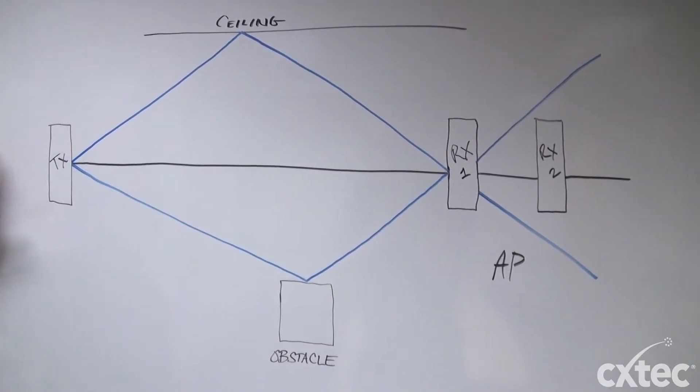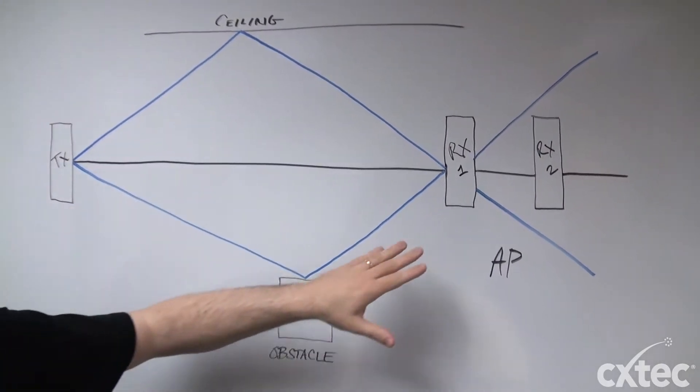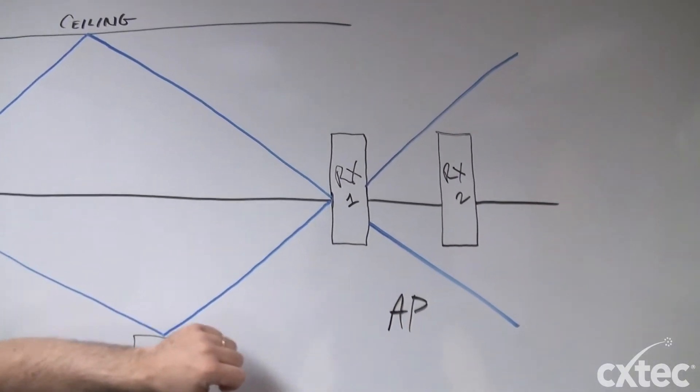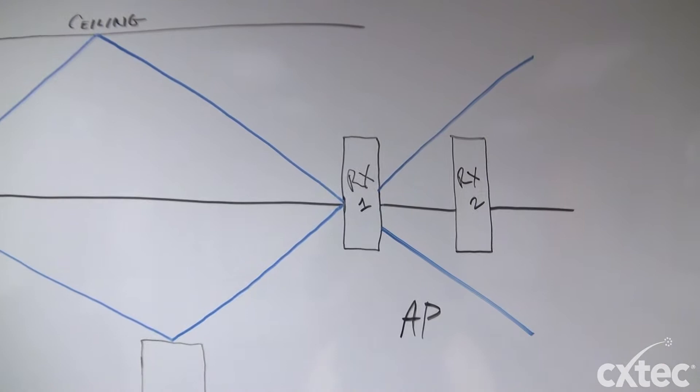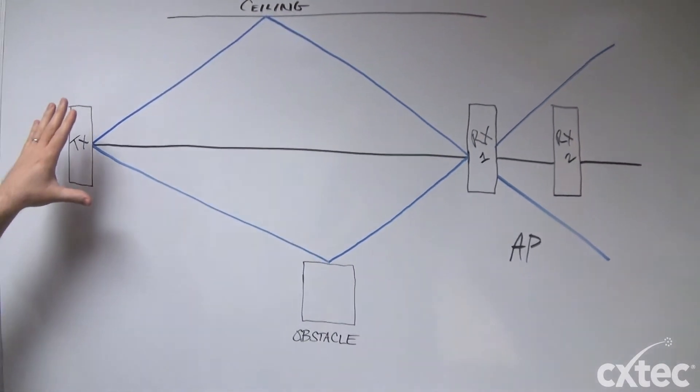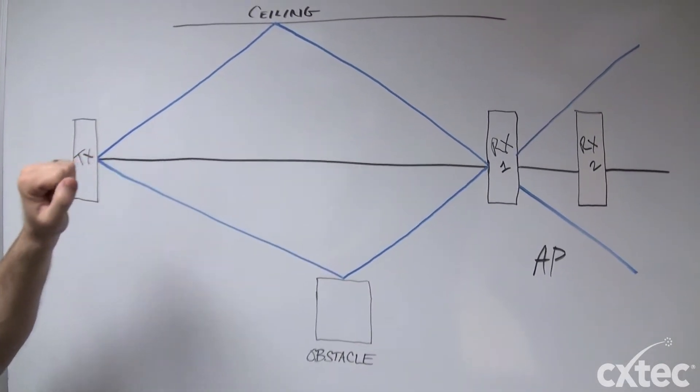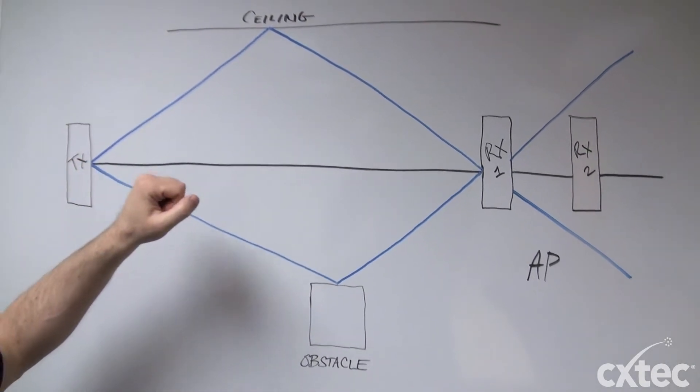Essentially, diversity is when you utilize more than one antenna in an access point to make sure that the throughput or the transmitted signal is good enough that we don't end up with what's called multi-path propagation.